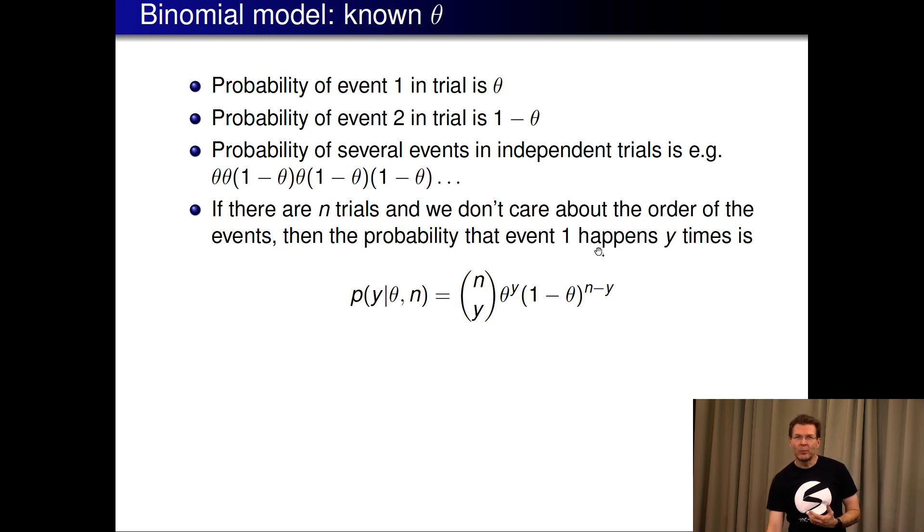This term here is the binomial combinatorial term, n over y, and it tells all the possible combinations given we have n trials and y of them were red. Then we get, if we know the probability of red and we know how many trials we had, we have probability for each y, each number of reds we might pick up.